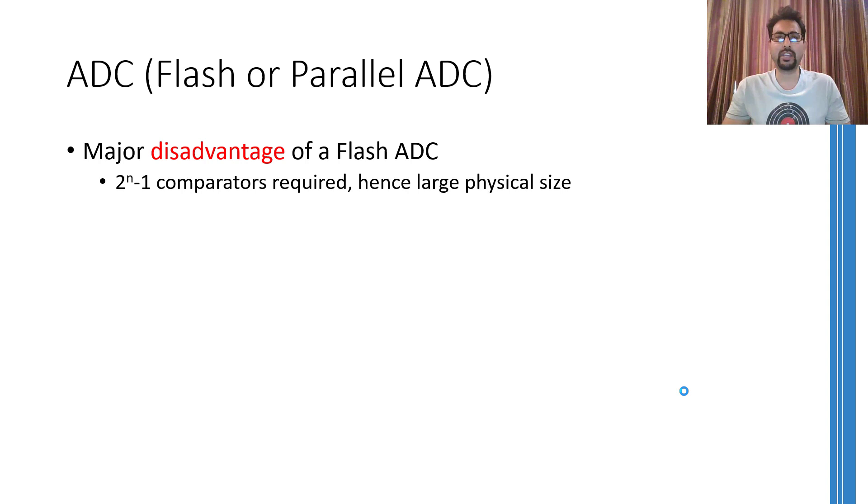Although flash ADCs are vastly used in practical applications, the major drawback coupled to them is their large physical size. This large physical size is because of the fact that this ADC uses 2 raised to power n minus 1 comparators to complete the conversion, where n stands for the number of bits.